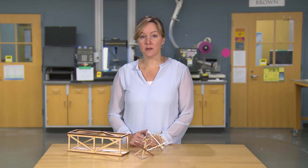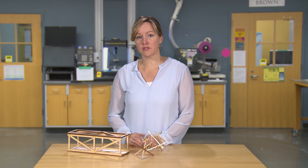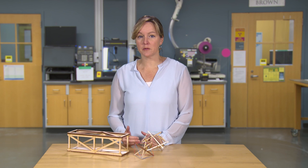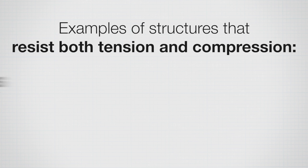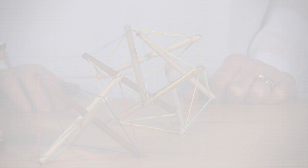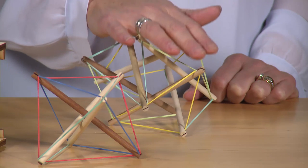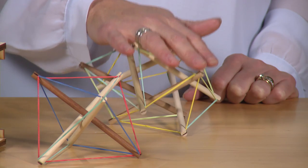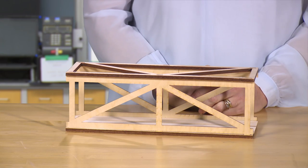Tension and compression typically work together in our structures to resist the applied loads. Some key examples of structures that resist tension and compression are tensegrity structures and trusses. These are examples of tensegrity structures, and this is a truss.